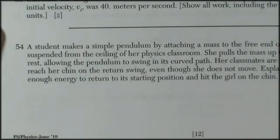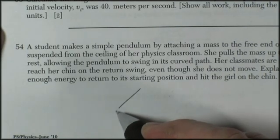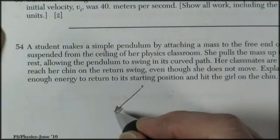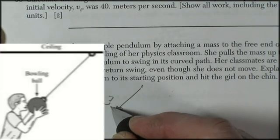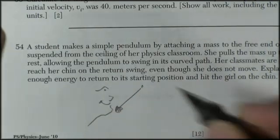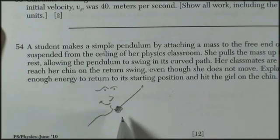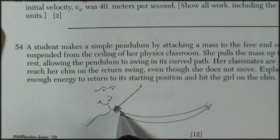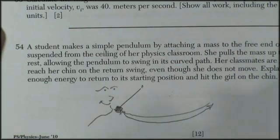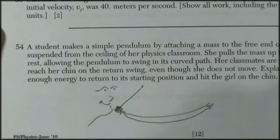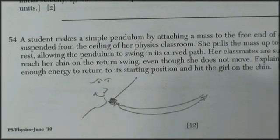Question 54. A student makes a simple pendulum by attaching a mass to the free end of a 1.5 meter length string. You put a mass here, attach it up there, you got yourself a pendulum. She pulls the mass to her chin and releases it from rest, and the pendulum swings along the curved path, comes back, but doesn't hit her chin. Her classmates are surprised the mass doesn't reach her chin because apparently they never saw this before. And she didn't move, which is good. Explain why the mass does not have enough energy to return to its starting position and hit the girl on the chin. We want to use complete sentences.